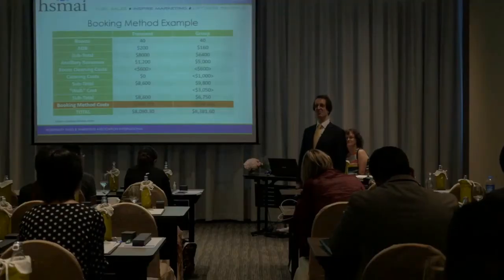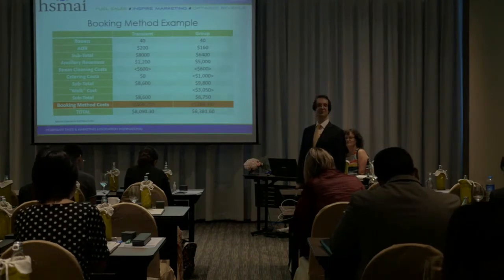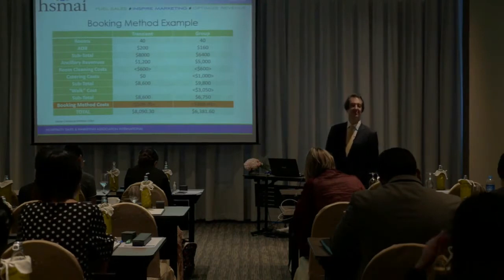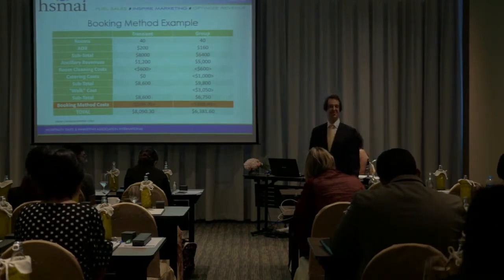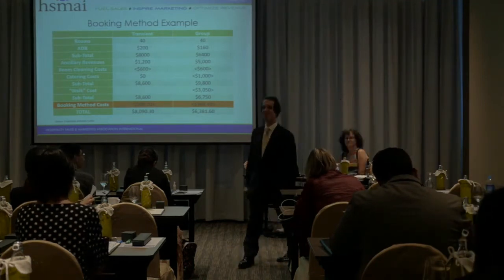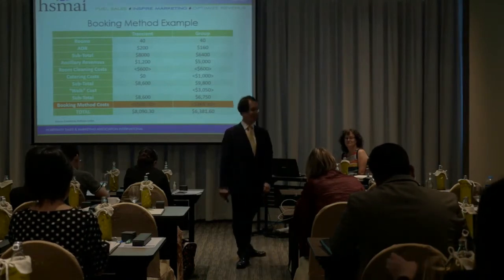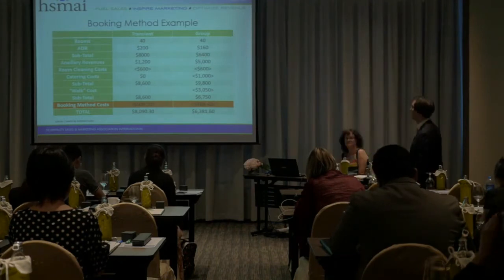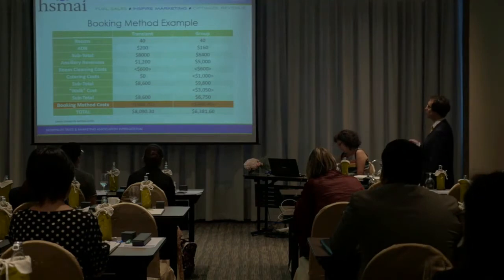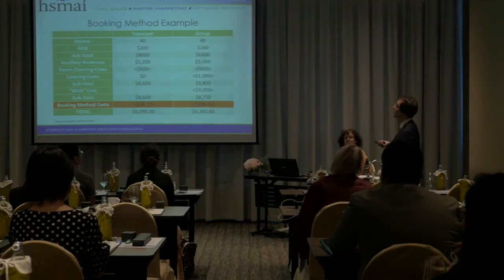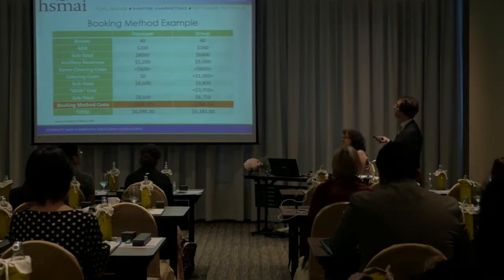Complete the exercise and see what the final outcome is — would we take the group or not? We are not taking the group. The final revenue for the group is $252, which is lower than the FIT. So we are not taking the group because, including all booking costs, walk costs, and ancillary revenue, it is not worth it — we are displacing more than we are actually making with this group.